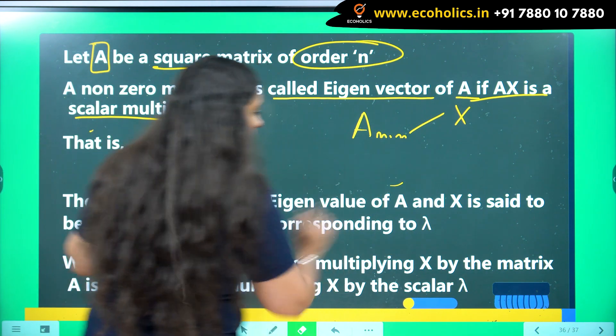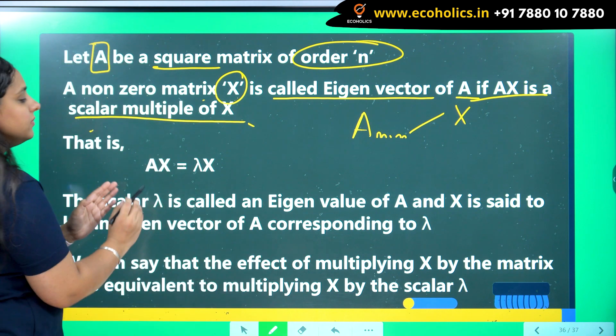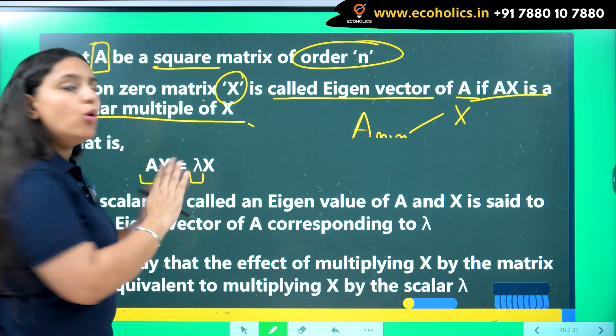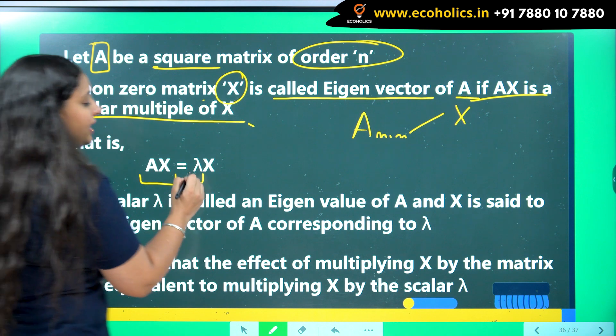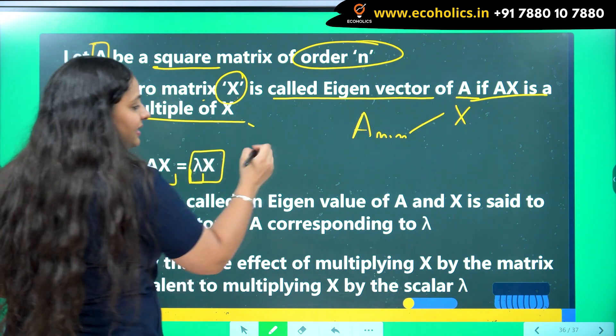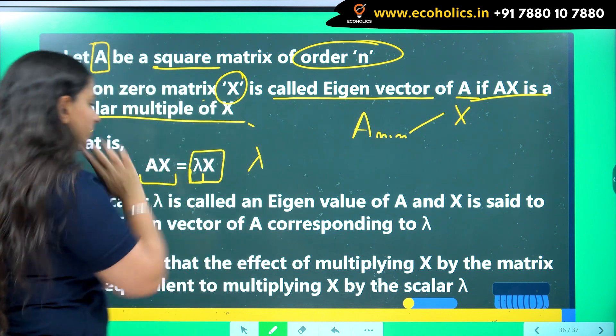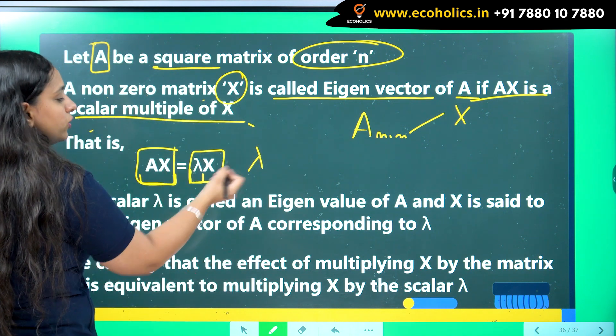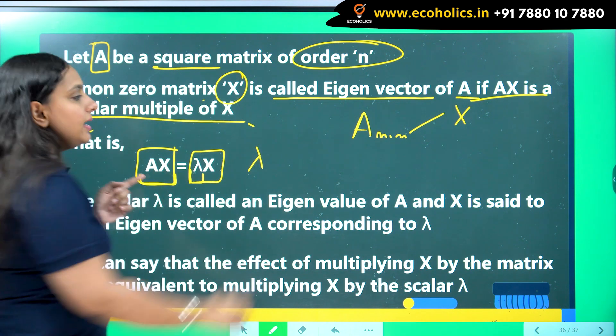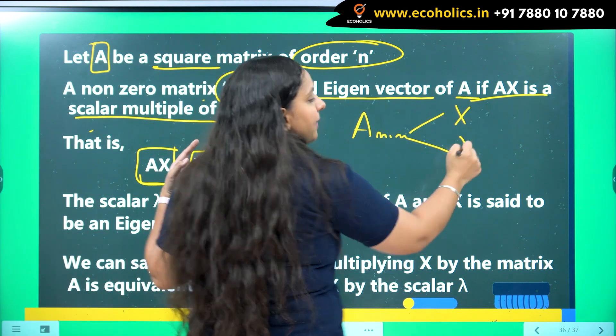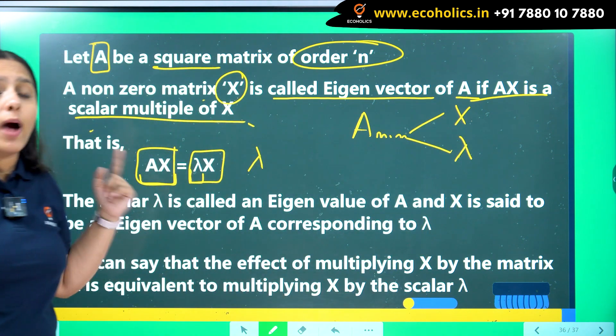As you can see here, I have written the same thing. So AX, now lambda over here is my scalar. So lambda into X basically means that lambda is the multiple of X here. So AX, if it is equal to lambda X, then X will be my eigenvector and this lambda will be my eigenvalue.